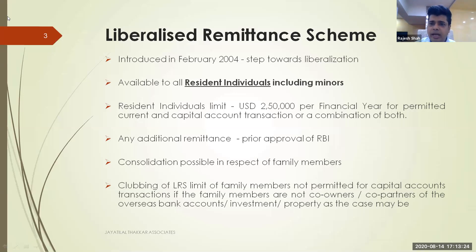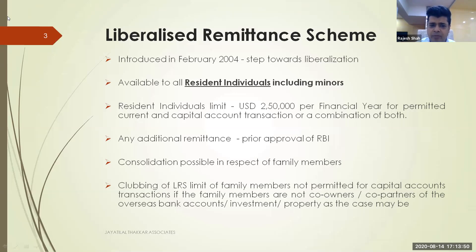Consolidation of funds is possible, but when investing in property abroad, care must be taken that all contributing family members are co-owners. It is not permissible for all four people to send money from India and have only one person registered as the owner. There are series of compounding orders on the RBI website confirming that investment by four people but ownership in one name leads to a compounding violation.